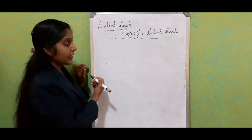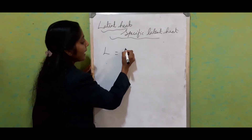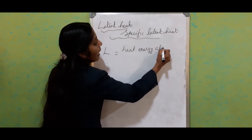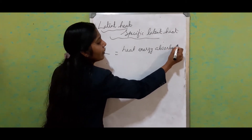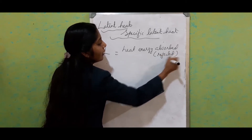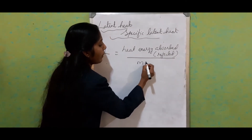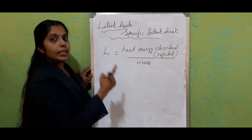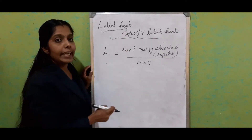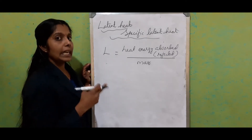If this latent heat is expressed for unit mass, we call it specific latent heat. We can write the specific latent heat as L, which is equivalent to the heat energy absorbed or rejected divided by mass. This is called specific latent heat — if we express the latent heat for unit mass, we call it specific latent heat.